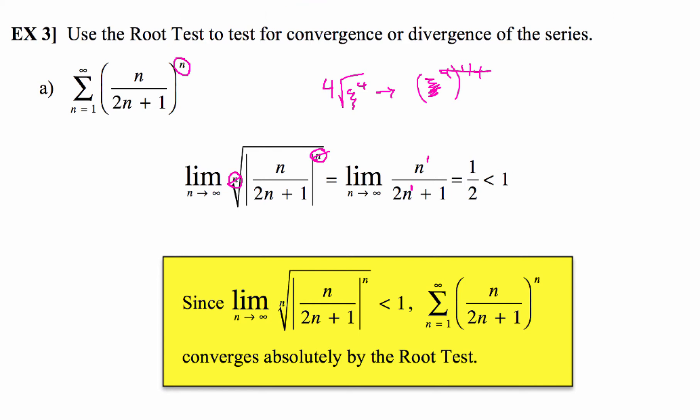So again, here's all the pieces that you have to put in your conclusion to make sure you get the points. Since the limit of blobs is less than 1, our series is going to converge absolutely by the root test. Include all those things and you get the points. Otherwise no points for you.